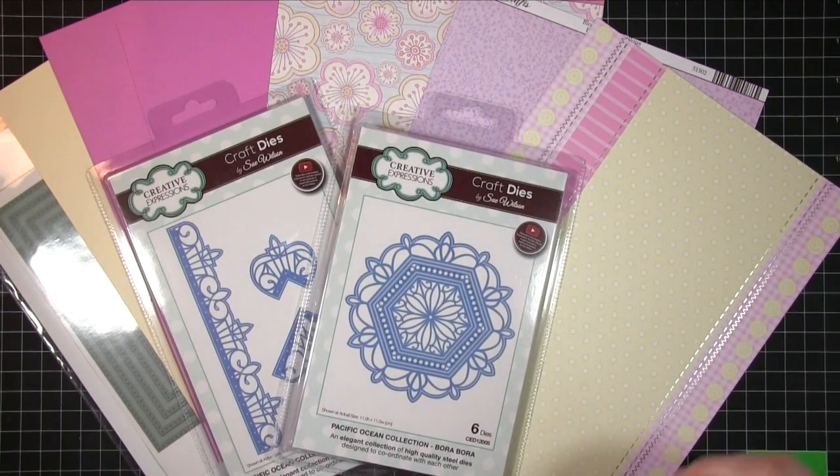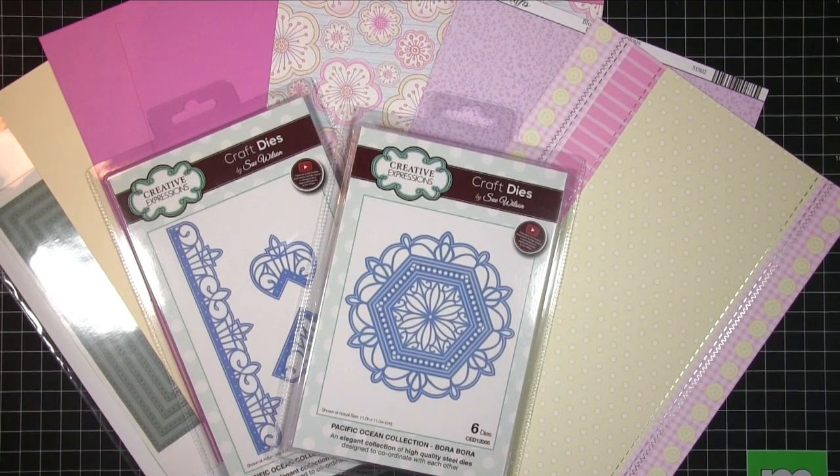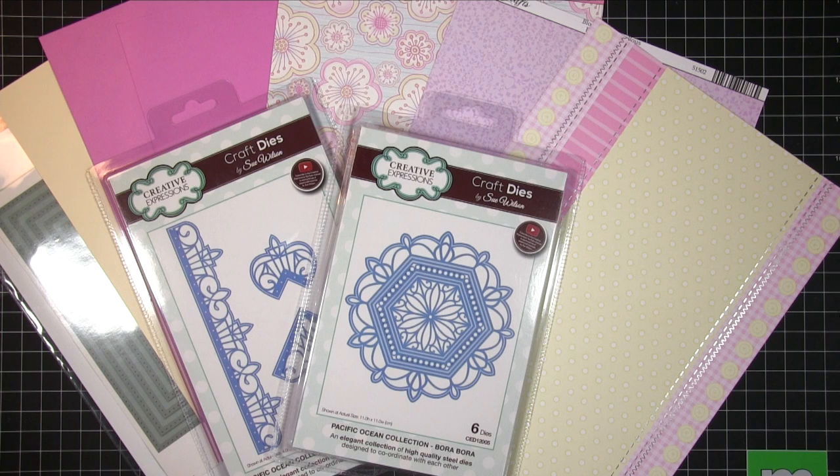Hi, it's Amanda here from Lollilu Crafts and today we're going to be making a gorgeous shaker card using the Sue Wilson Pacific Ocean dies and this lovely candy colored cardstock from Kanban. So let's get crafting.